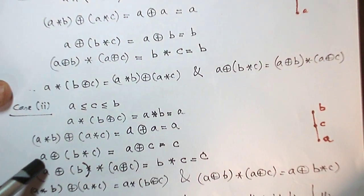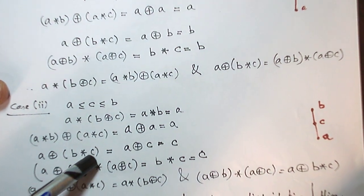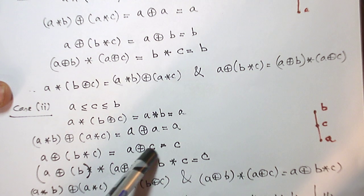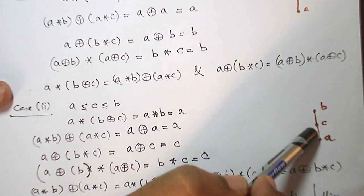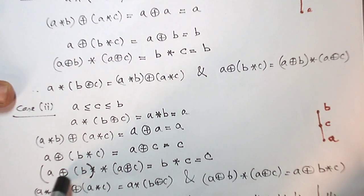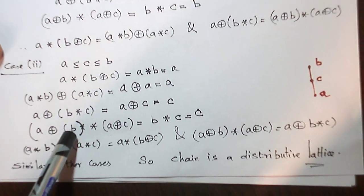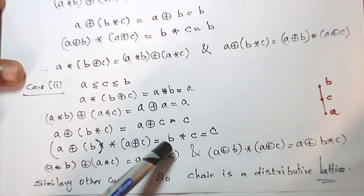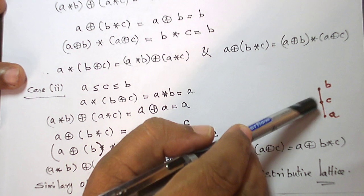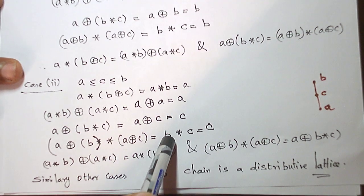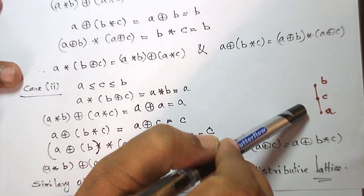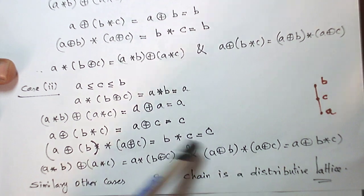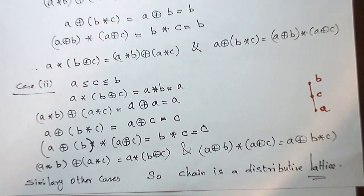For the other distributive law in case 2, A∨(B∧C): B∧C — the smaller among B and C — is C. So A∨C — the larger among them — is C. The right-hand side (A∨B)∧(A∨C): A∨B — the larger among A and B — is B. A∨C — the larger among A and C — is C. B∧C — the smaller among them — is C. Left side and right side are equal, so the distributive laws are verified for the second case as well.